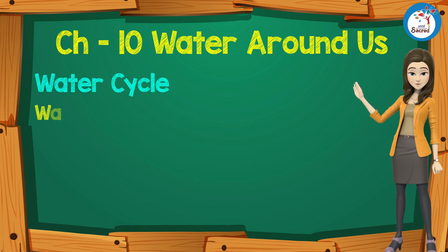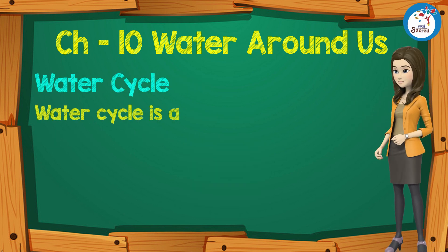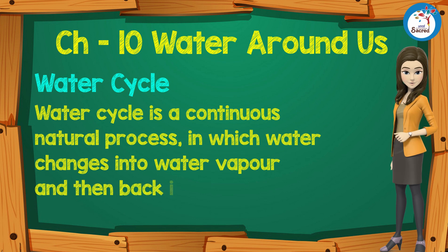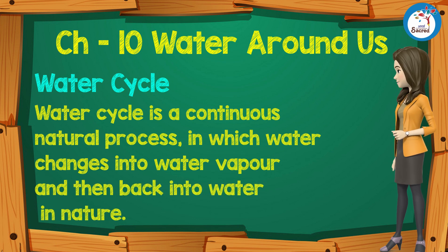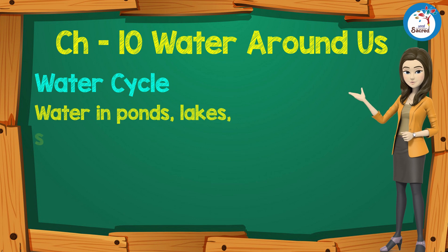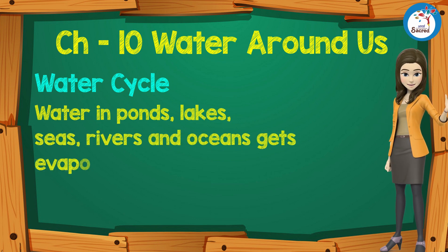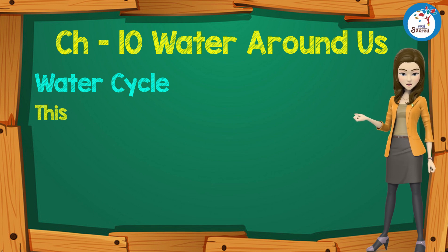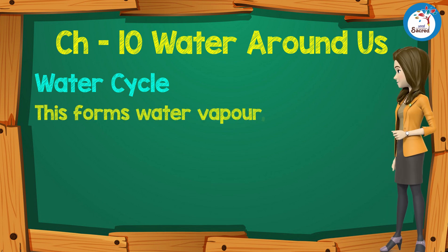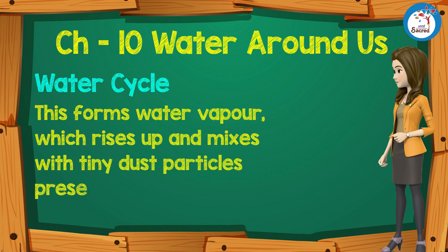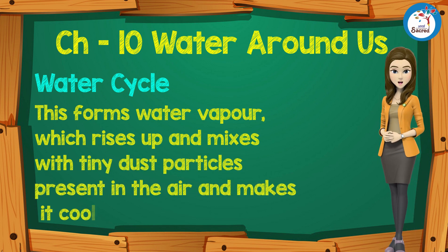Water cycle: The water cycle is a continuous natural process in which water changes into water vapor and then back into water in nature. Water in ponds, lakes, seas, rivers, and oceans gets evaporated due to the heat of the sun. This forms water vapor, which rises up and mixes with tiny dust particles present in the air and cools down.